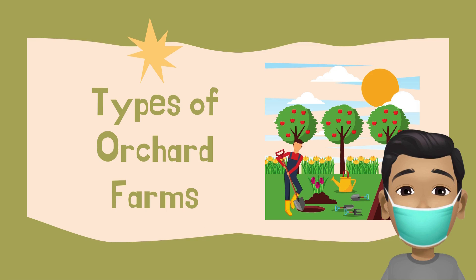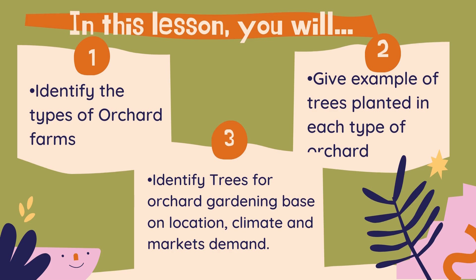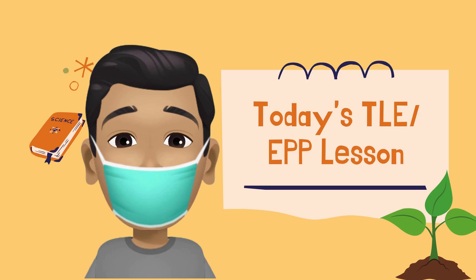Are you excited for a fun learning session? Our lesson is all about types of orchard farms. In this lesson, you will identify the types of orchard farms, give examples of trees planted in each type of orchard, and identify trees for orchard gardening based on location, climate, and market demand. To start today's lesson, let me ask you: what is an orchard?